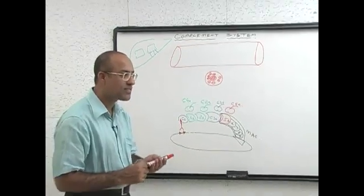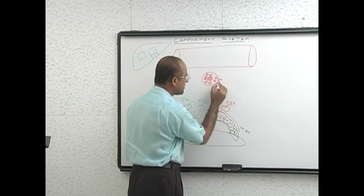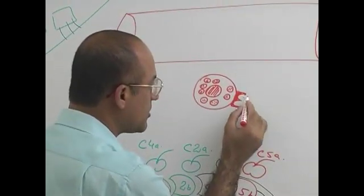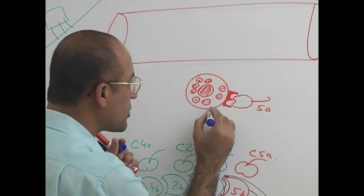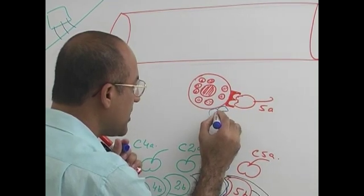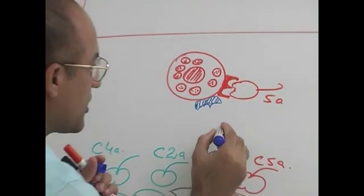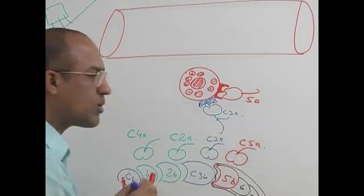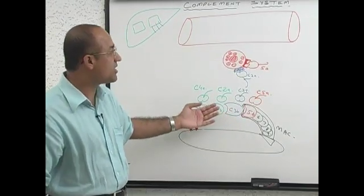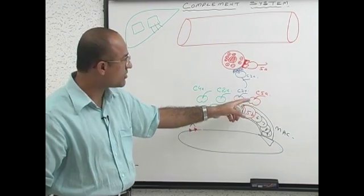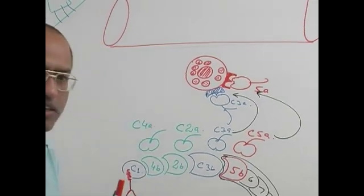Especially C3A and C5A — mast cells have receptors on their surface for C3A and C5A. So when bacteria produce injury and the complement system is activated by any pathway, a lot of C3A and C5A products are produced. These can simply activate the local mast cells.